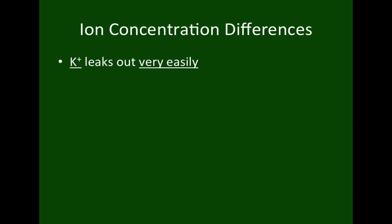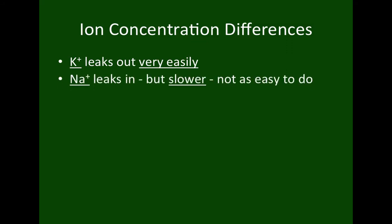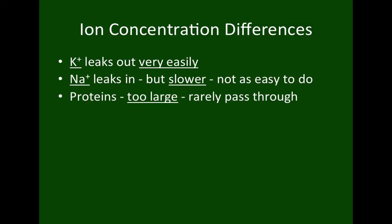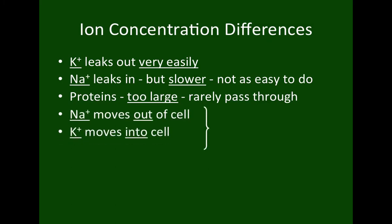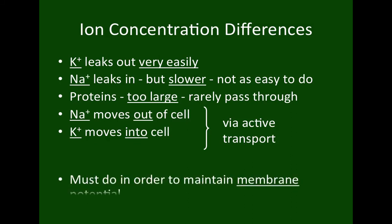At resting potential, potassium leaks out very easily to the outside of the cell, while sodium leaks into the cell more slowly. Proteins are too large and very rarely pass through, so the negative ions don't tend to move — it's sodium and potassium we focus on. Sodium has to move out and potassium has to move in. Because this is against the concentration gradient, it must happen via active transport, expending energy, since this is not the direction they naturally want to flow. This is crucially important to maintain the membrane potential.